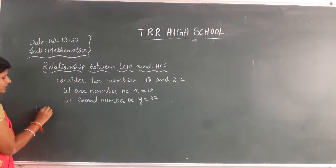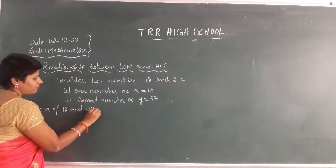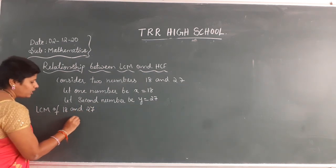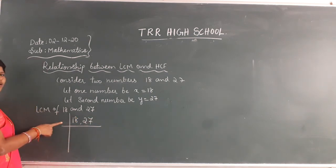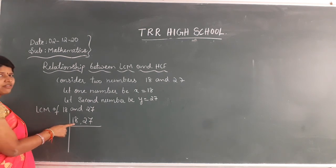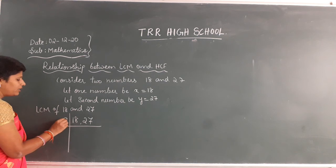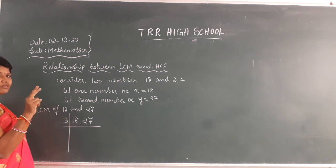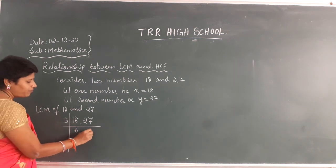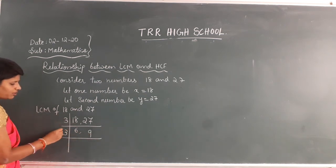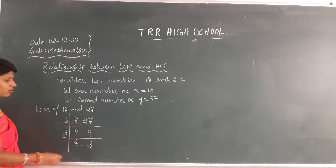Now I will find out the LCM of 18 and 27, using the division method. If I take 2, 18 is divisible but 27 is not. So better we go with 3. As I said, both numbers must be divisible. If I take 3: 3 sixes are 18, 3 nines are 27. Again take 3: 3 twos are 6, 3 threes are 9.